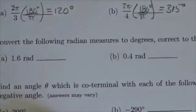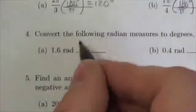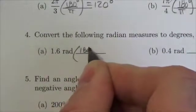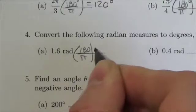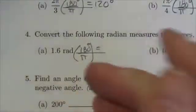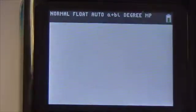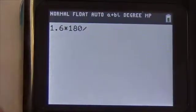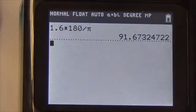So let's take a look at this first one here, 1.6 radians. We're going to multiply this by 180 degrees over π. Now this really just becomes calculator work. So 1.6 times 180 divided by π. To the nearest tenth, that's 91.7.